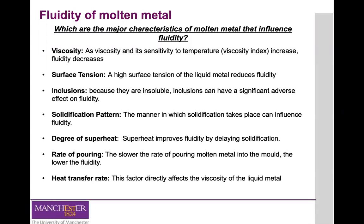High surface tension of the liquid metal has the capability of reducing the fluidity of your material. This can happen because of oxide films that are formed on the surface of the molten metal, which have a significant adverse effect on fluidity. For example, the formation of oxide films on the surface of pure molten aluminum triples the surface tension and therefore substantially decreases the fluidity. The inclusion of insoluble particles can also have an adverse effect on fluidity.